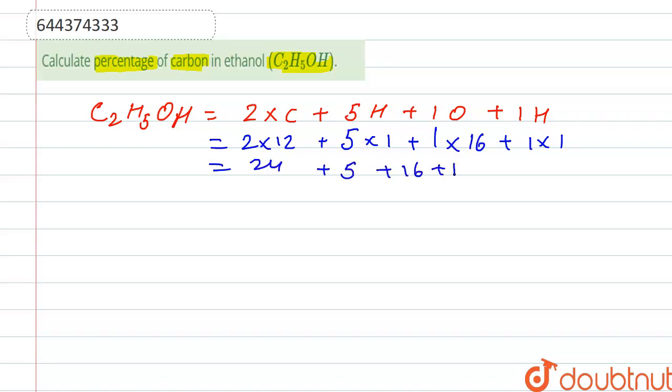This gives us total 46 grams. So molecular weight of C2H5OH is 46 grams. Now we have to calculate the percentage of carbon in ethanol.